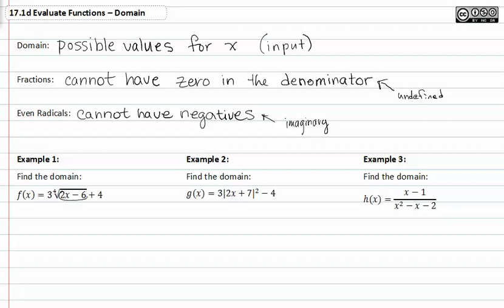Notice that this is all we would be worried about since it's the fourth root or an even root, so 2x minus 6 needs to be greater than or equal to zero.